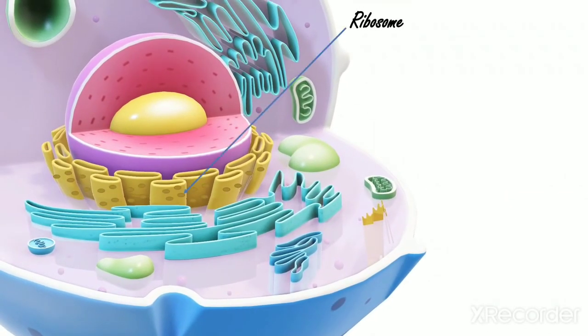Seven, Ribosomes. The rough surface of endoplasmic reticulum contains some granule structure which are spherical in shape called ribosomes. Function: Their main function is protein synthesis in the cell.